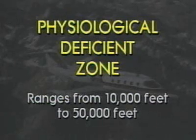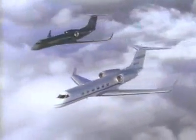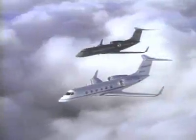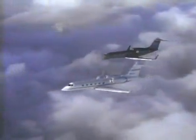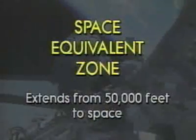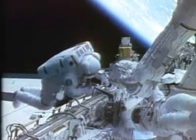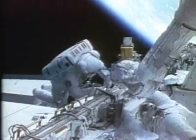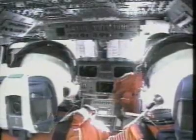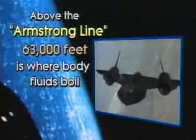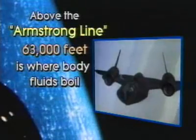The physiological deficient zone ranges from 10,000 feet to 50,000 feet, where the majority of flying takes place. Inadequate oxygen, atmospheric pressure, and cold temperatures do not allow for normal physiological functions in this zone. The space equivalent zone extends from 50,000 feet to space — a very hostile environment. An artificial environment produced by a full space suit or sealed spacecraft is required. Above the Armstrong line at 63,000 feet is where body fluids boil.